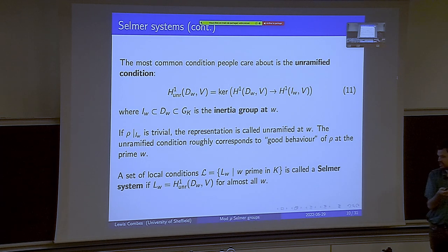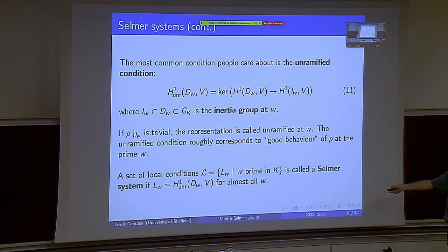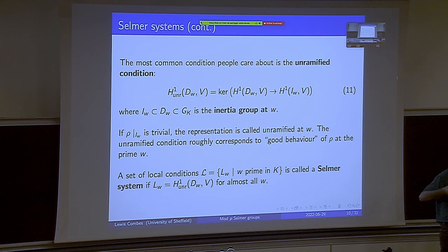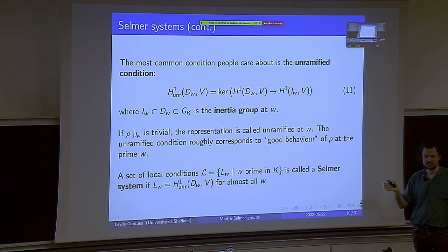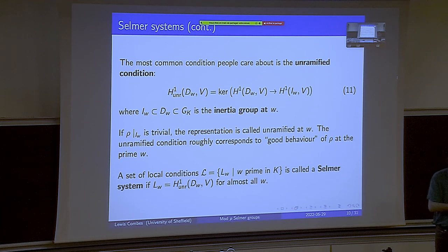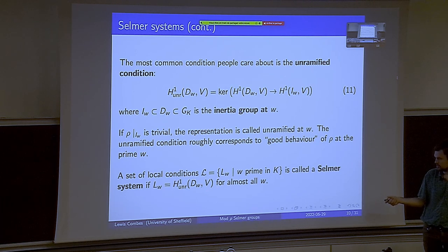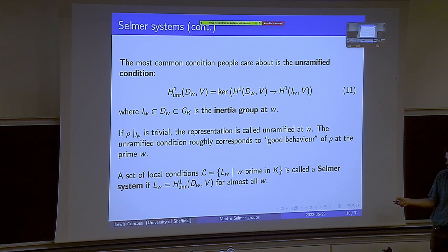A set of local conditions is called a Selmer system if you're choosing the unramified condition for almost all places W. This reflects the idea that representations coming from geometry are unramified almost everywhere. Then maybe there is some condition at P — potentially semi-stable. We choose the unramified condition almost everywhere to capture what happens for geometric representations.